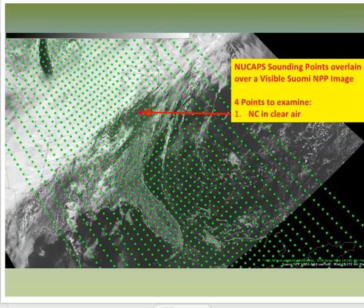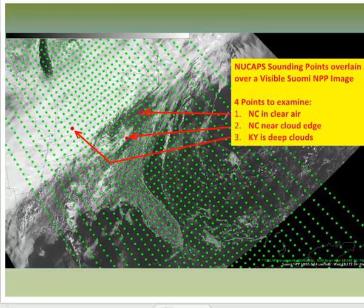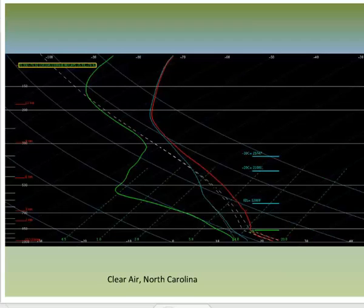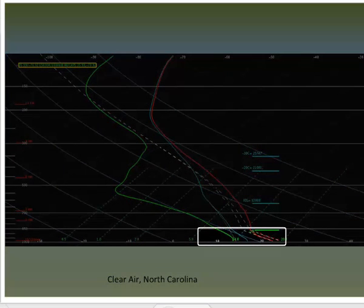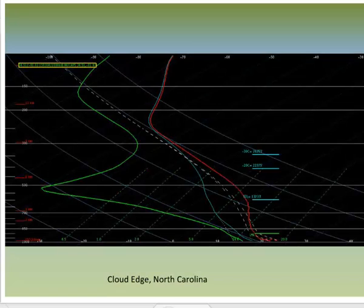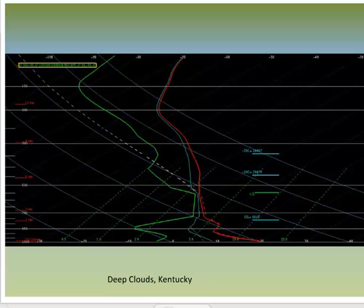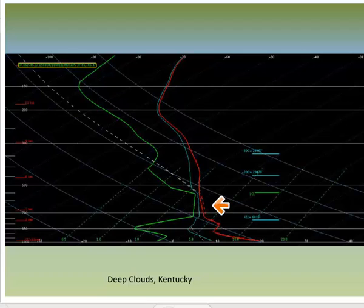I will show you four soundings: one in North Carolina in clear air, one in North Carolina near a cloud edge, one in Kentucky that's in deep clouds, and one near Sarasota, Florida. The sounding in clear air over North Carolina is smoothly varying, as is typical for atmospheric soundings derived from satellite, with a well-mixed boundary layer. The sounding near the cloud edge shows much drier air aloft and a somewhat more moist lower level. The sounding in deep clouds probably failed to converge, and an error flag is available. Soundings that look non-physical are most common in regions of thick cloudiness, so use NuCAPS soundings with caution in such regions.